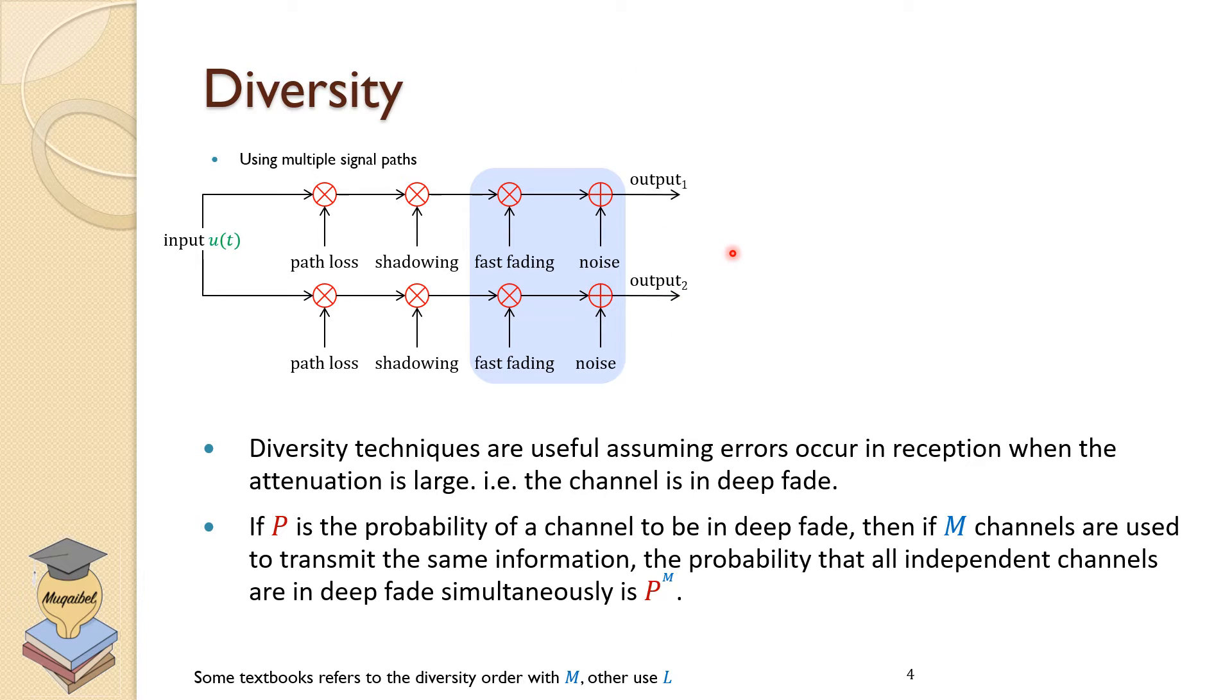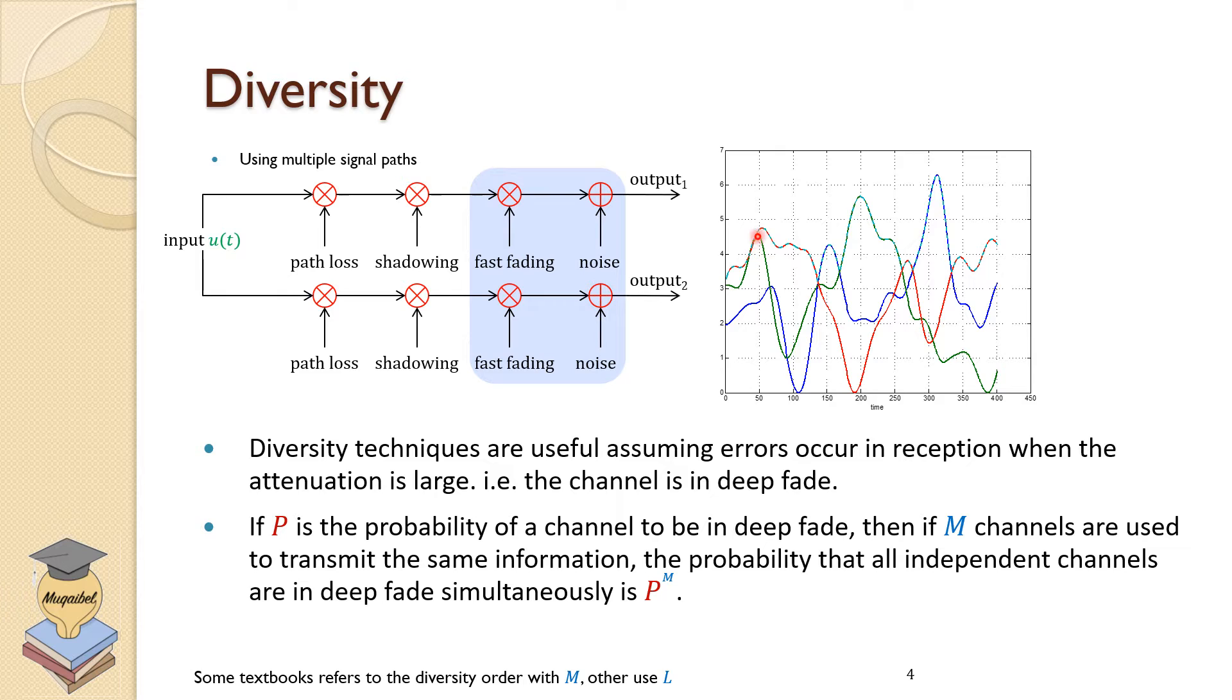If we are doing receiver diversity, which means we are having two antennas at the receiver device, we expect there's going to be similar path loss and similar shadowing, but the small scale fading or fast fading will be different from one antenna to another. The following shows the time and signal level and how things vary with time.